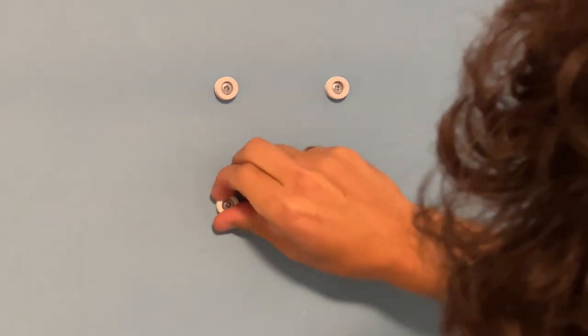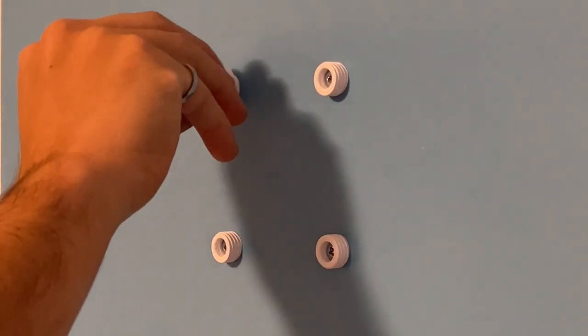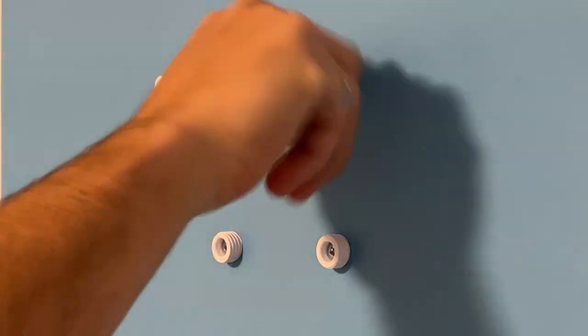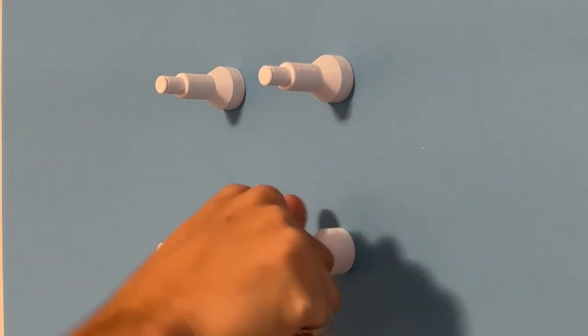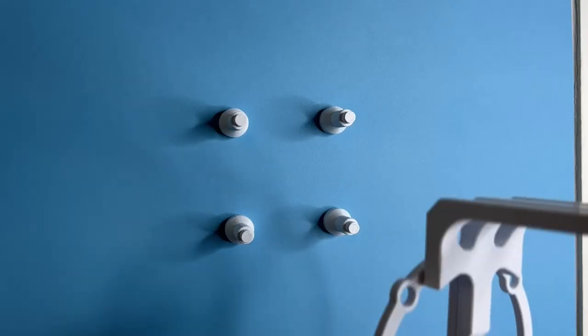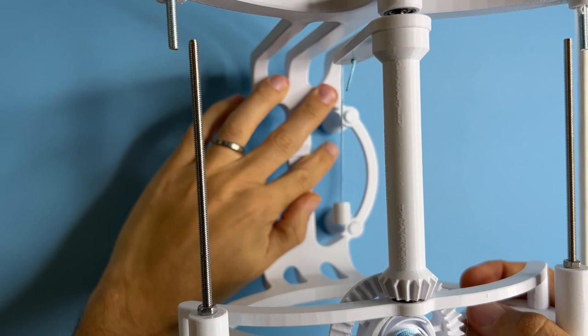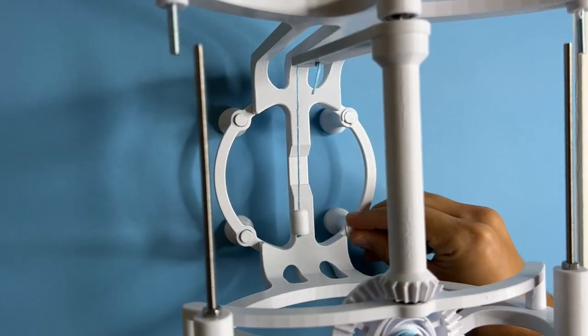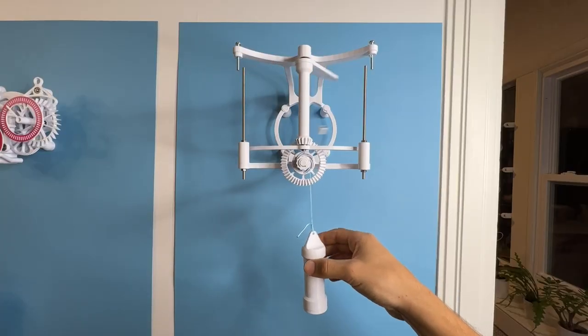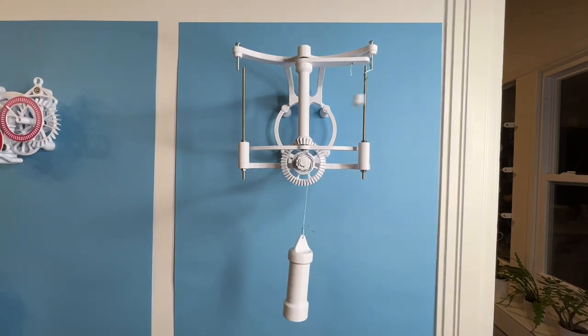Make sure that the wall anchors are super tight. And then screw the wall posts directly onto the anchors. Slide your mechanism onto the wall posts and then use 4 C-clamps to hold it in place. Release the weight and the mechanism will start doing its thing.